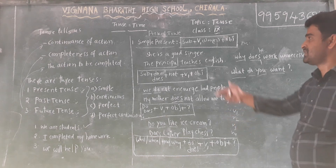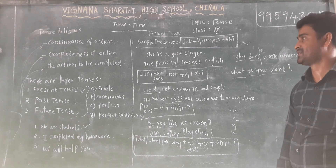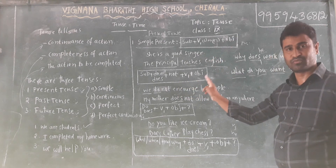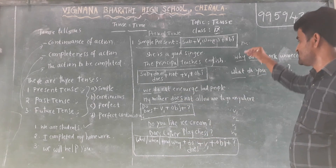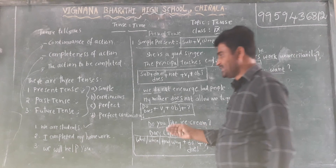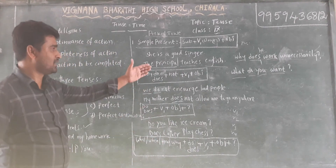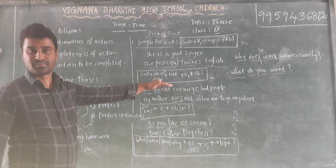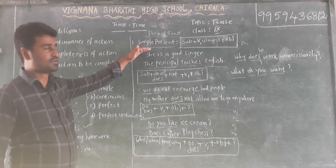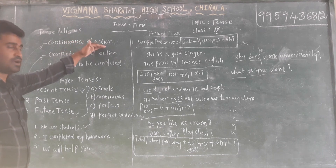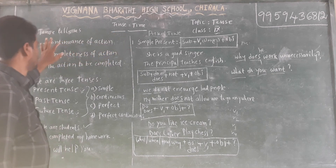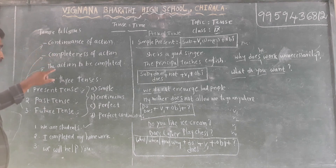So my dear students, these are the sentence formations in simple present. To sum up: tense means time — it tells about the time of action. Tense tells about continuous of action, completeness of action, and the action to be completed. There are three basic tenses: present, past, and future. And they have four sub-tenses: simple, continuous, perfect, and perfect continuous.